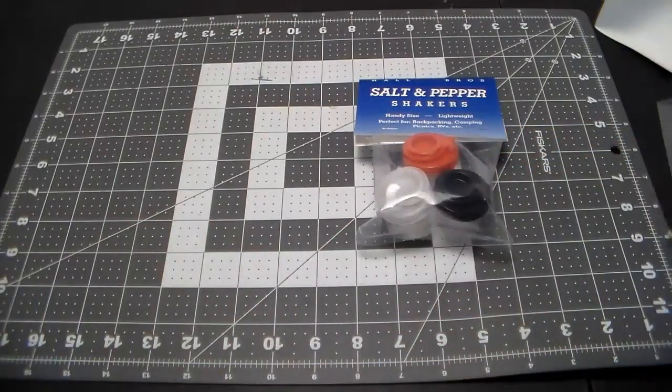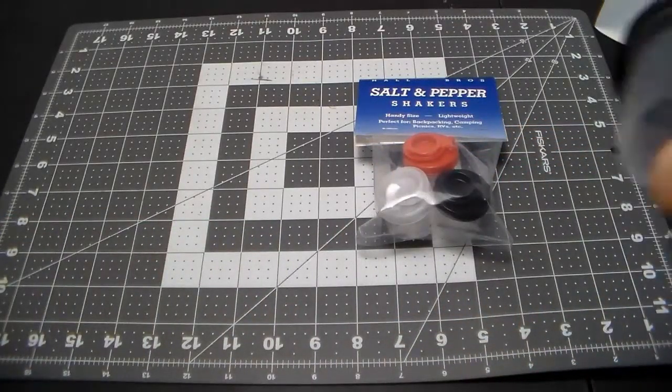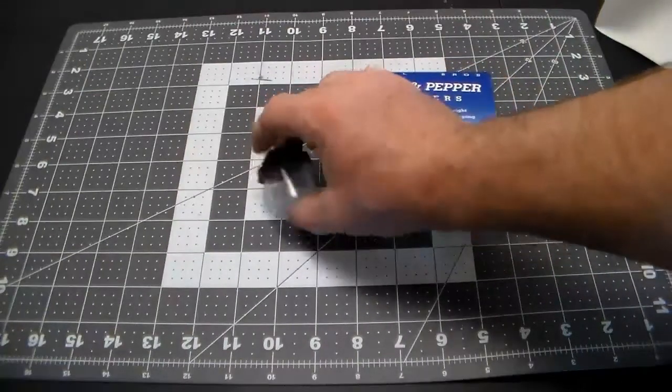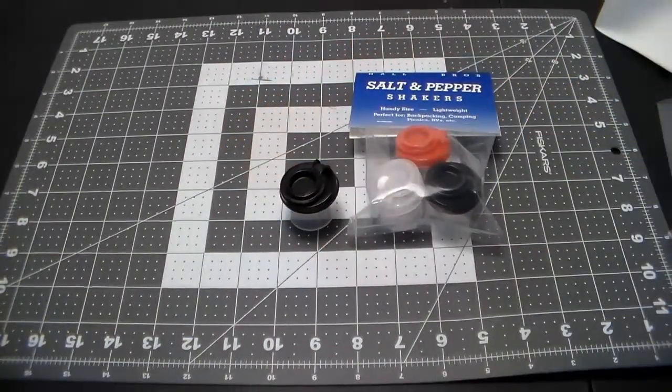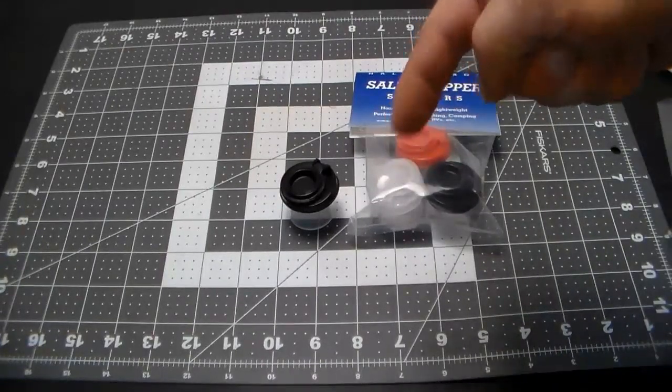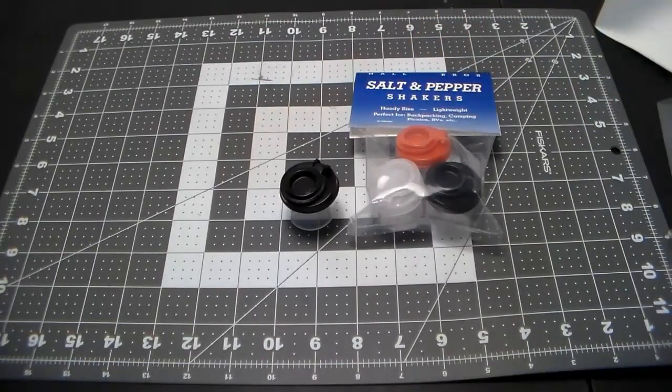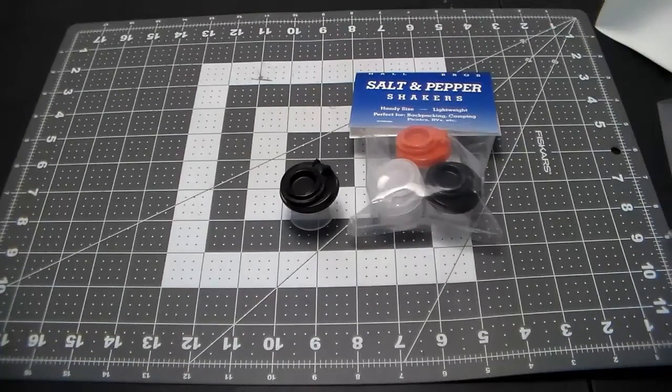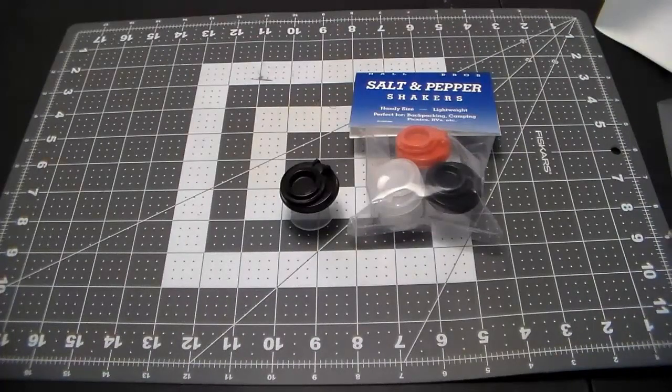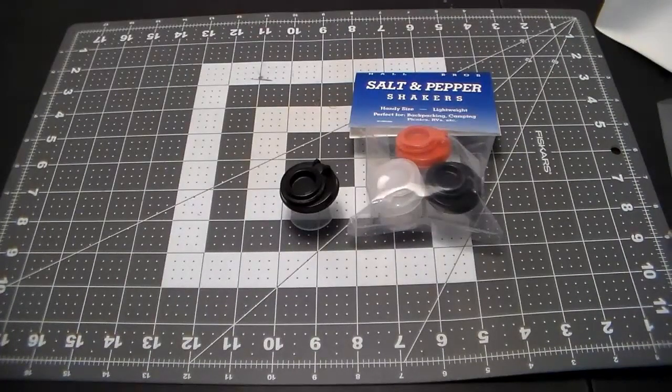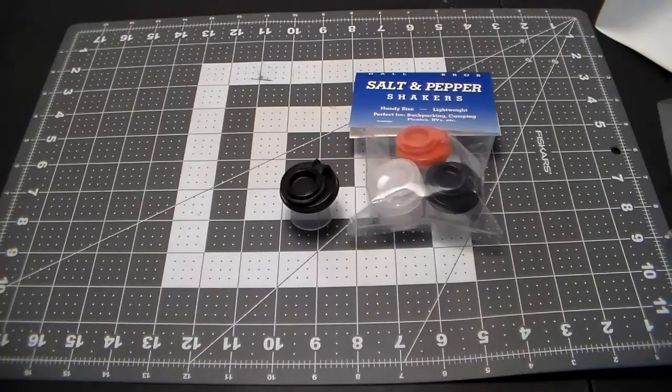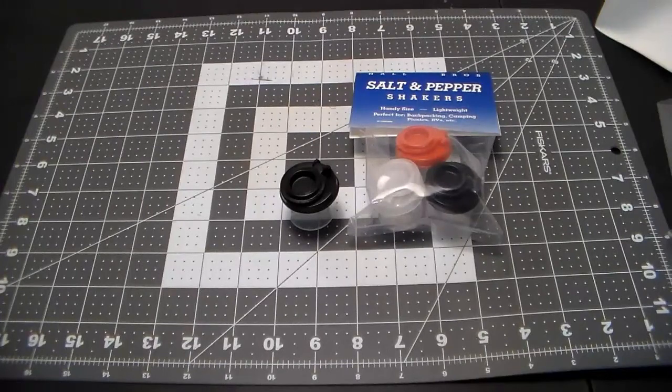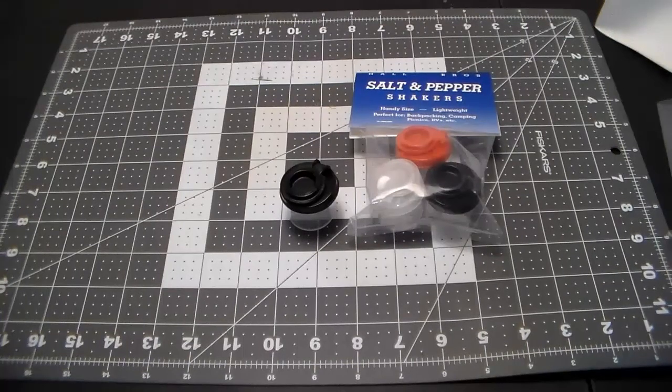Let me give you some specs from the actual Amazon page, link in the description. These are salt and pepper shakers with moisture-proof lids. You can get them from two pieces to five pieces, BPA free plastic, strong, long-lasting, dishwasher, freezer, and fridge safe.